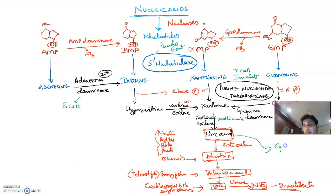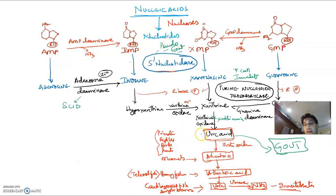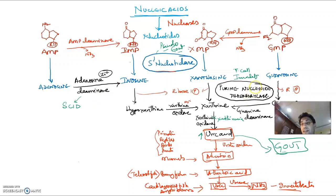Absence of xanthine oxidase leads to xanthinuria. Overproduction of uric acid leads to gout. Summary: 5'-nucleotidase overactivity→pseudogout; increased uric acid production→gout; ADA deficiency→SCID (both T and B cells affected); purine nucleoside phosphorylase deficiency→T cell immunodeficiency.